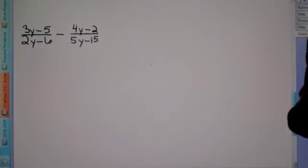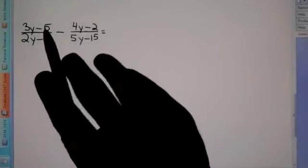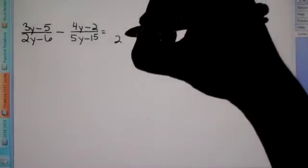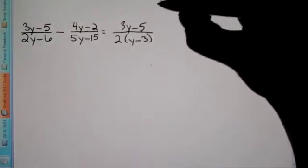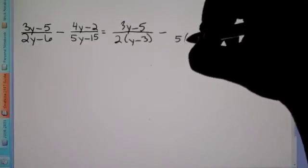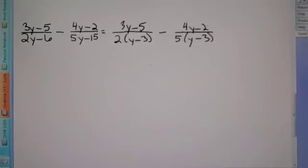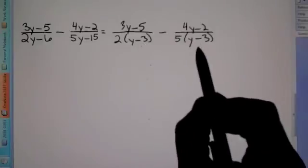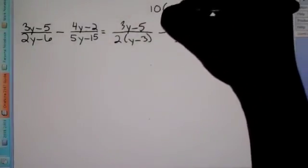Our next example is what happens when you have variables on top as well. We want to find our common denominator — don't worry about the numerator right now, don't factor anything out of the numerator. Factoring the first denominator, we get 2 times y minus 3, with 3y minus 5 on top. Factoring the second denominator, we get 5 times y minus 3, with 4y minus 2 on top. I know you can factor 2 out of 4y minus 2, but we don't factor the top until we've combined the numerators. I see y minus 3 in both denominators — we're good there — but for the 2 and the 5, we need a common denominator of 10 times y minus 3.